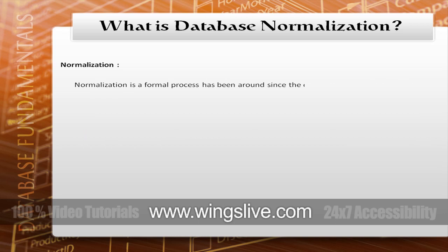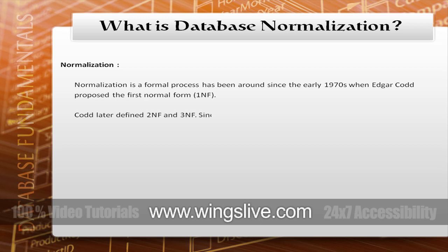Normalization is a formal process. It's been around since the early 70s when Edgar Codd proposed the first normal form, or 1NF. Codd later defined 2NF and 3NF. Since that time, several higher-level normal forms have been defined.